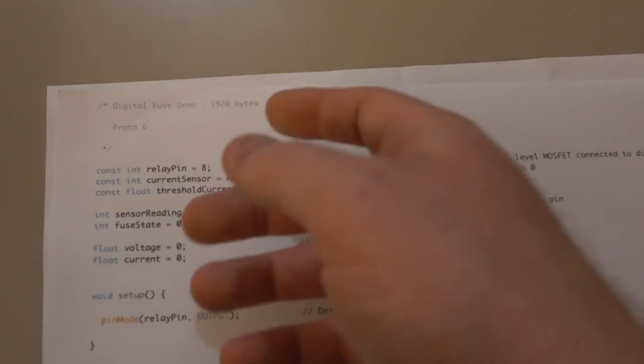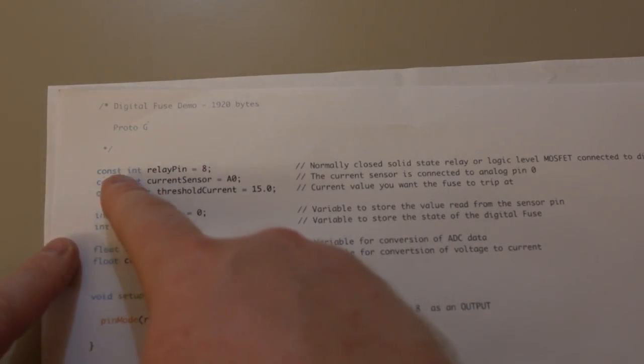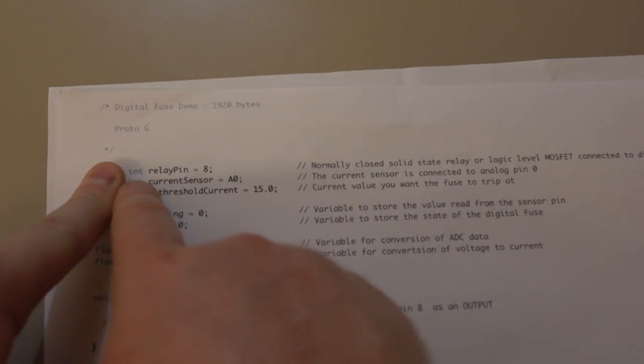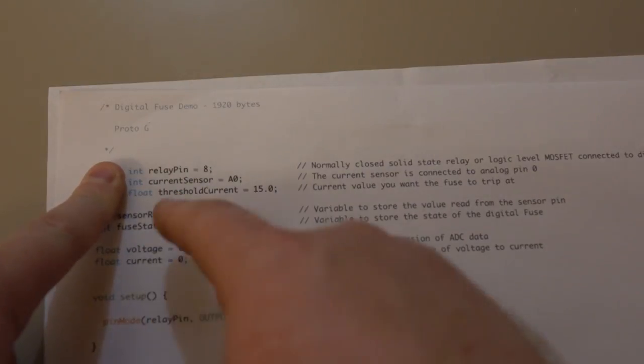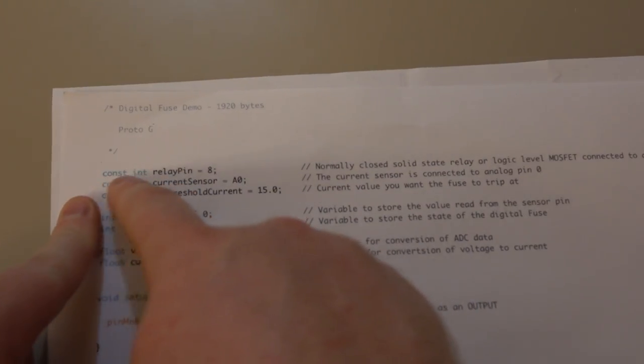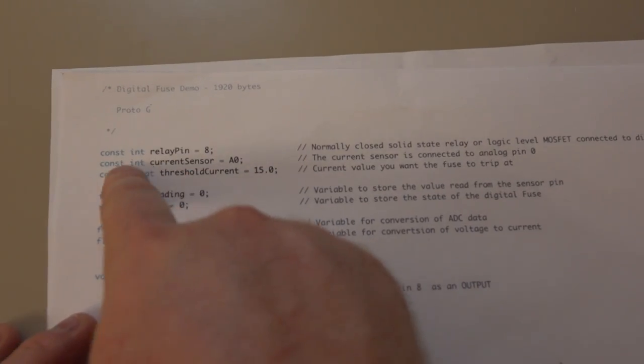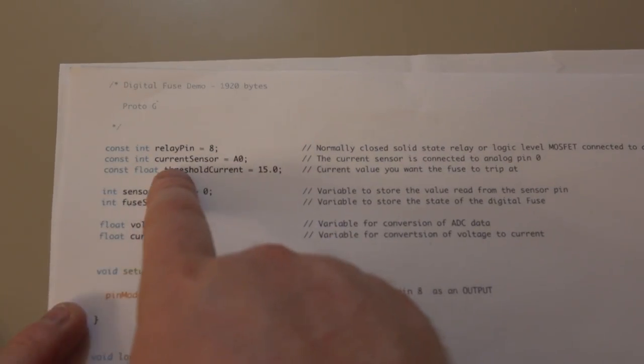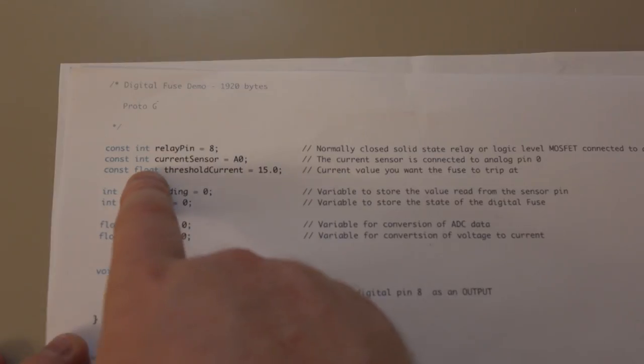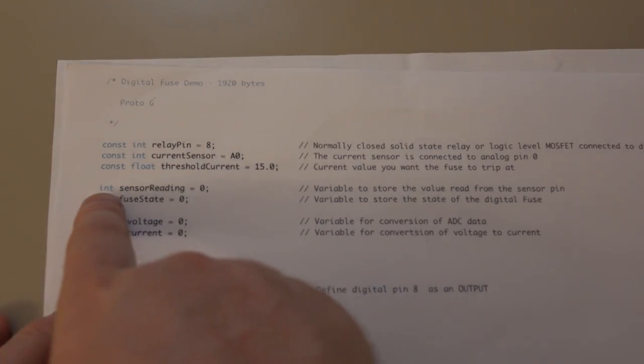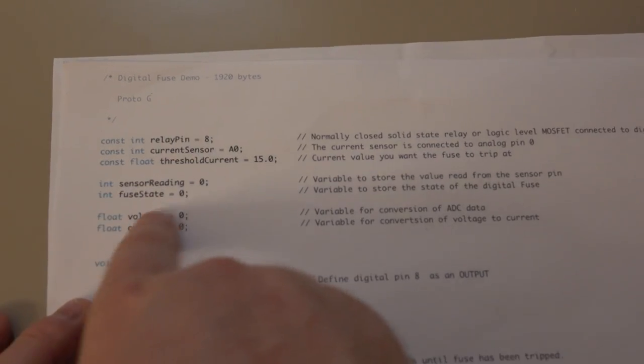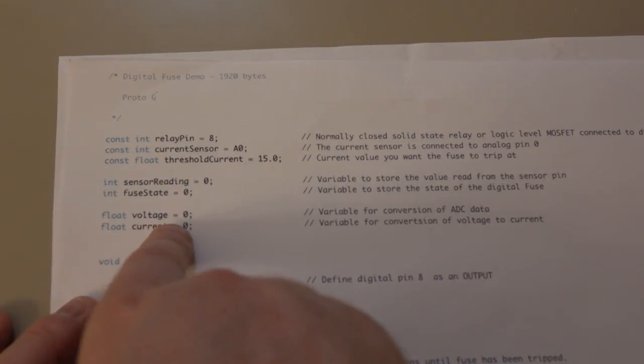So this would be identical, it would still work, but it's just a good habit to get into for defining a constant integer as a constant integer. A constant float is the same thing except instead of an integer, it's a decimal value that can store up to 6 or 7 digits. And here we have integers that we know are going to change and floats that we know are going to change.